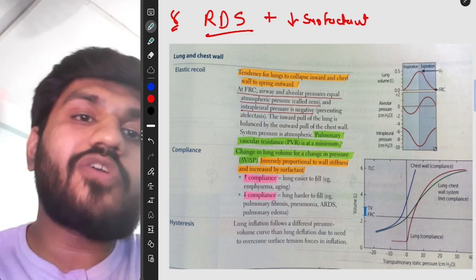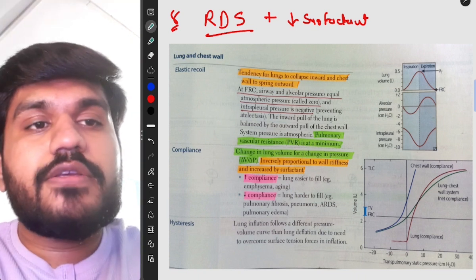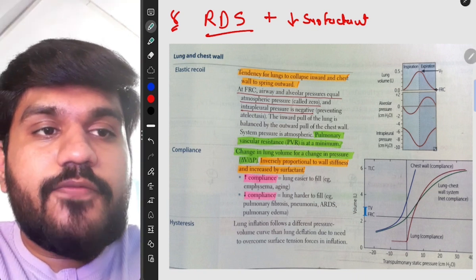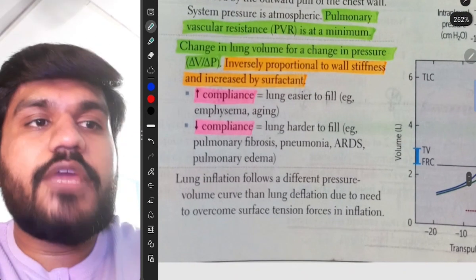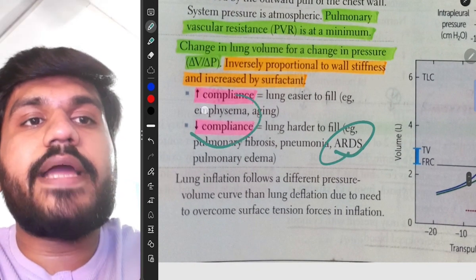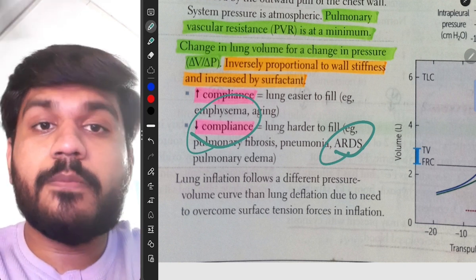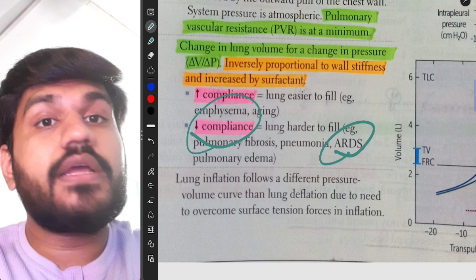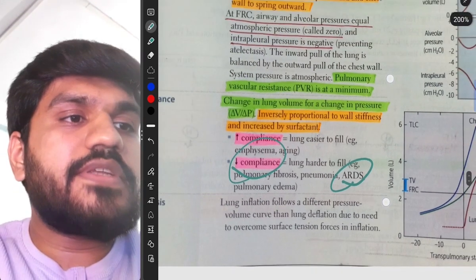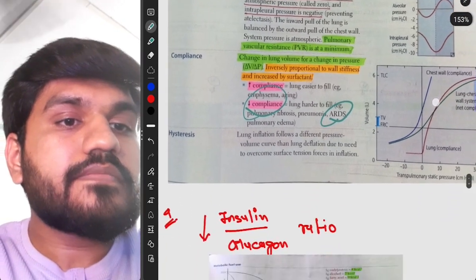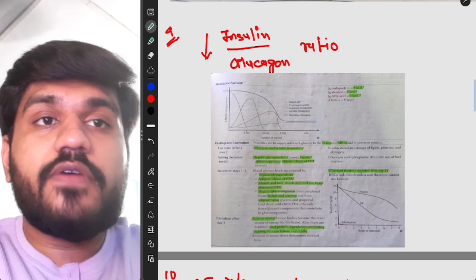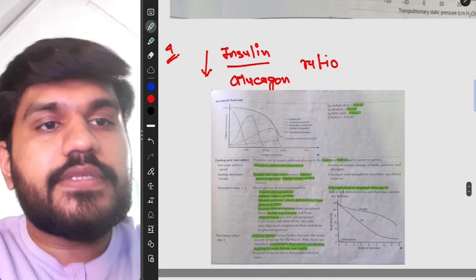Now we're going to move on to another question: RDS, respiratory distress syndrome and decreased surfactant. If you don't have surfactant then our alveoli will get collapsed. So what will occur? So if we have RDS, then our compliance will decrease and tension will increase. So this is really easy.